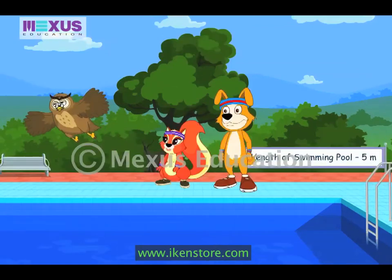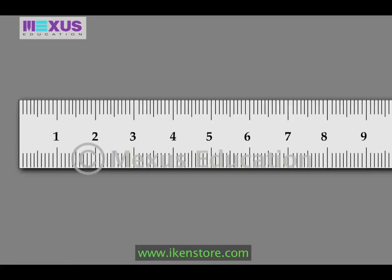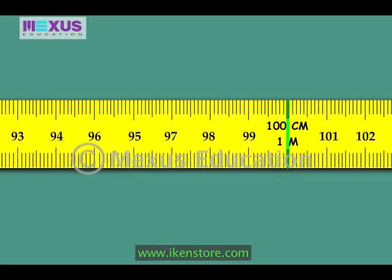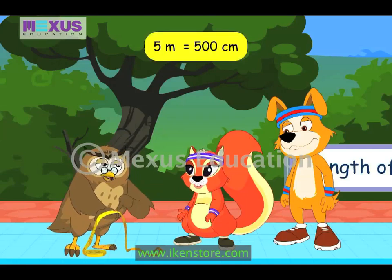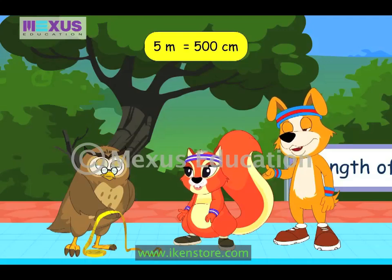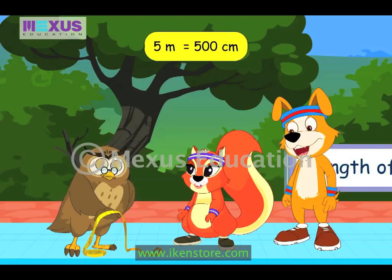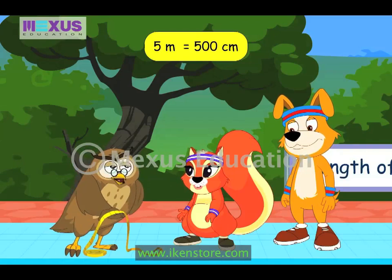Let me show you one. See the markings on this measuring tape. Smaller markings are centimeters and bigger ones are meters. One meter is equal to 100 centimeters. That means 5 meters is equal to 500 centimeters. So it would have taken us a very long time to measure the length of the pool in centimeters.